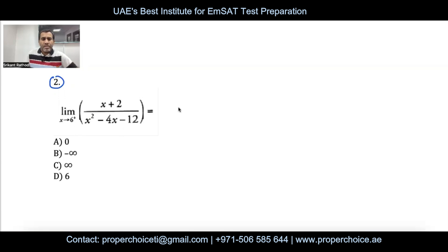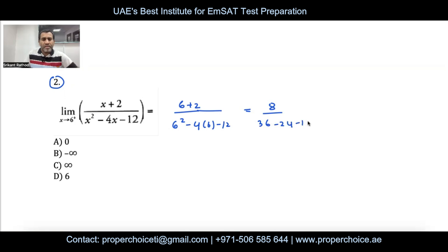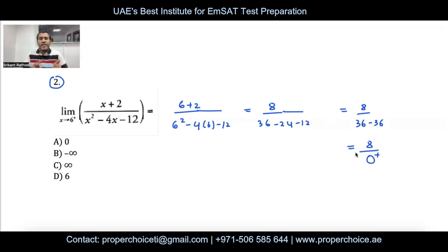Substituting x = 6: the numerator is 6 + 2 = 8. The denominator is 6² − 4(6) − 12 = 36 − 24 − 12 = 0. So we get 8 divided by 0. Since the limit is approaching from the right side, I write the denominator as 0⁺, meaning a slight positive value.